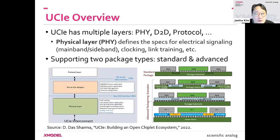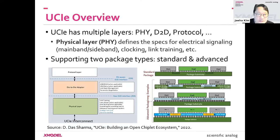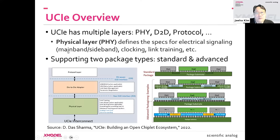To give you a bird's eye overview of UCIe, its spec defines the interface in multiple layers, just like most interface standards. There are documents describing the physical layer, the die-to-die layer, protocol layer, and so on. In today's webinar, we'll focus on the physical layer, which defines specs for electrical signals — how data is transmitted from one UCIe interface to another.